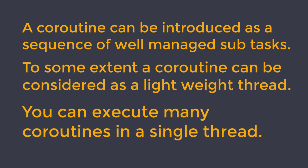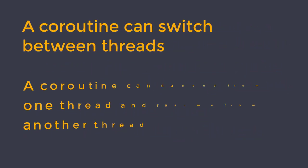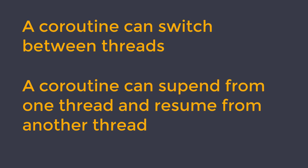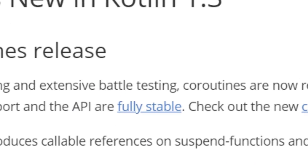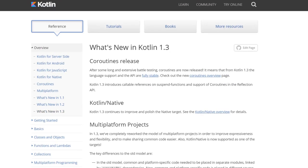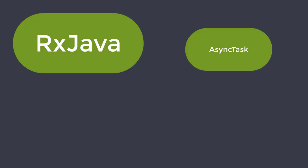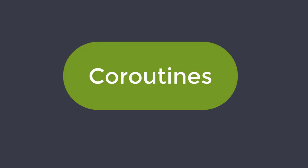You can execute many coroutines in a single thread. A coroutine can also be switched between threads — it can be suspended from one thread and resumed from another. With the release of Kotlin 1.3, we now have a fully stable coroutines API. All the painful multi-threading tasks done with RxJava, async tasks, executors, handler threads and intent services can be easily done with coroutines.